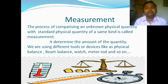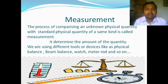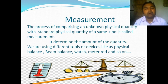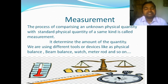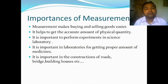We are measuring different types of things in our daily life by the help of different devices or tools. This measurement determines the amount of a quantity — how much the quantity is. We also use different types of devices like hands, meter rod, beam balance, watches, and physical balance, and so on.